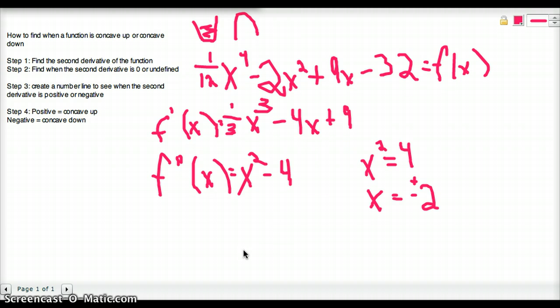Alright, so now we have the zeros, we can make a number line. To do that, we're just going to make a line. And we're going to put on the line the zeros. So here's 2, negative 2.